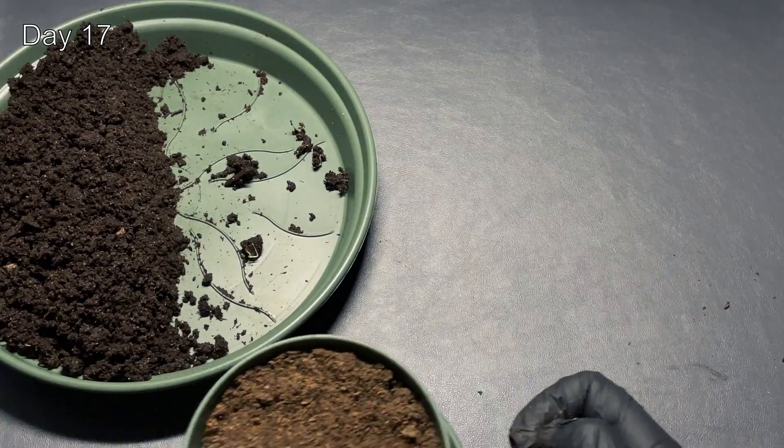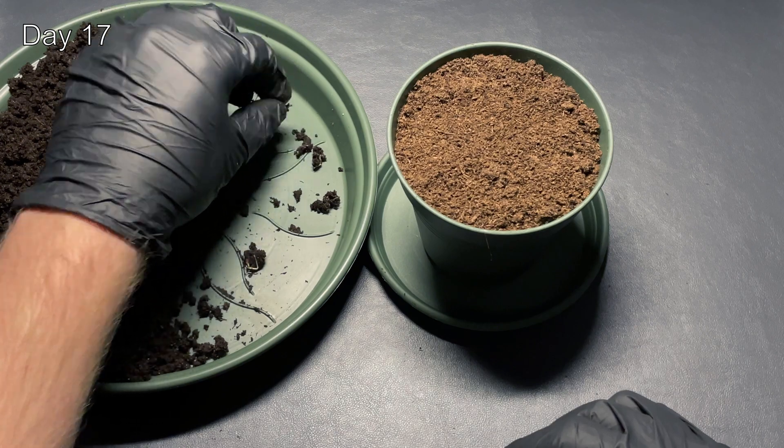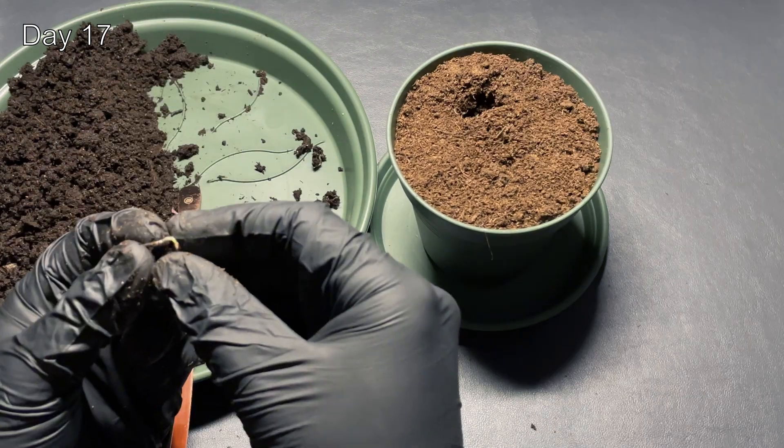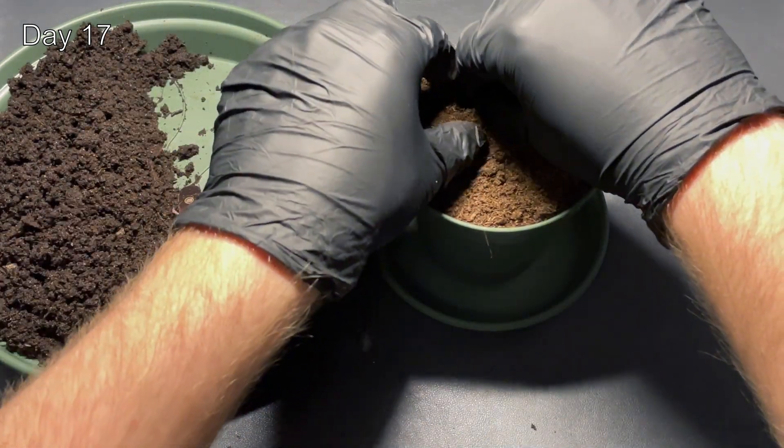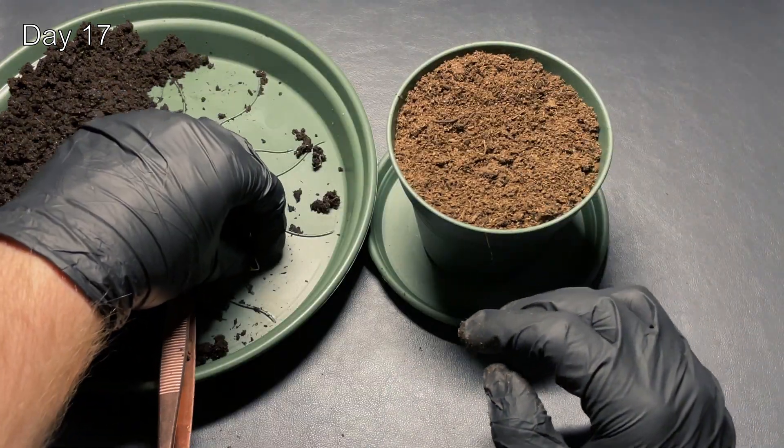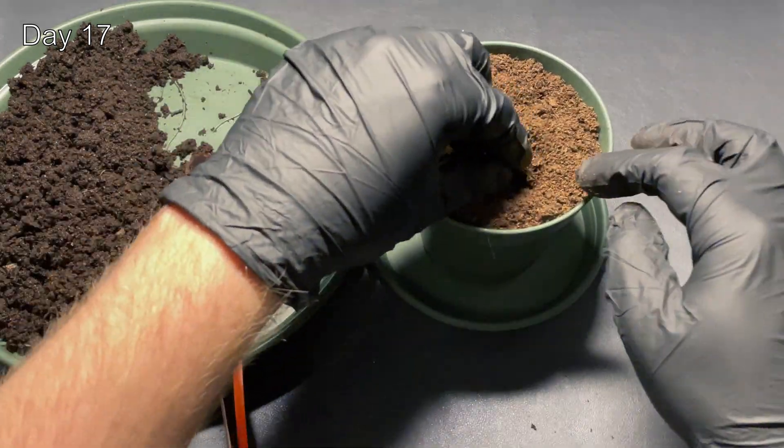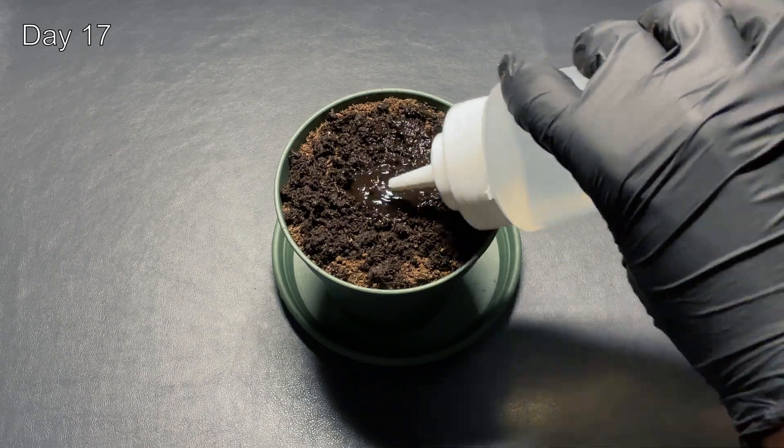Bury the germinated seeds about 1 centimeter deep in a pot with drainage holes and potting mix. Apply water until the surface is moist.